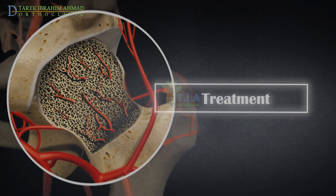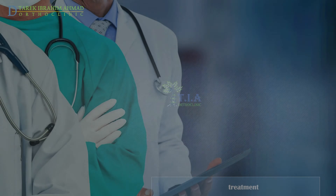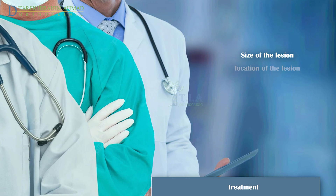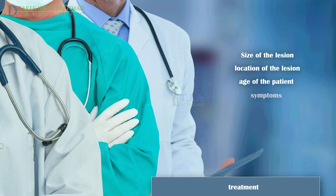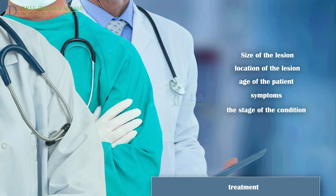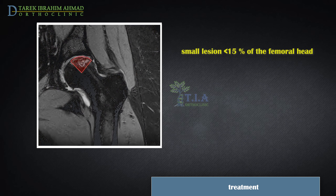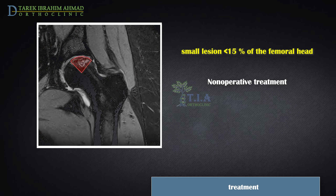The treatment of avascular necrosis depends on the size of the lesion, its location, age of the patient, symptoms, and most importantly the stage of the condition. For patients with no evidence of femoral head collapse, management is largely guided by the volume of bone affected and likelihood of progression to collapse. For patients with a small lesion involving less than 15% of the femoral head, non-surgical treatment is suggested rather than surgery.